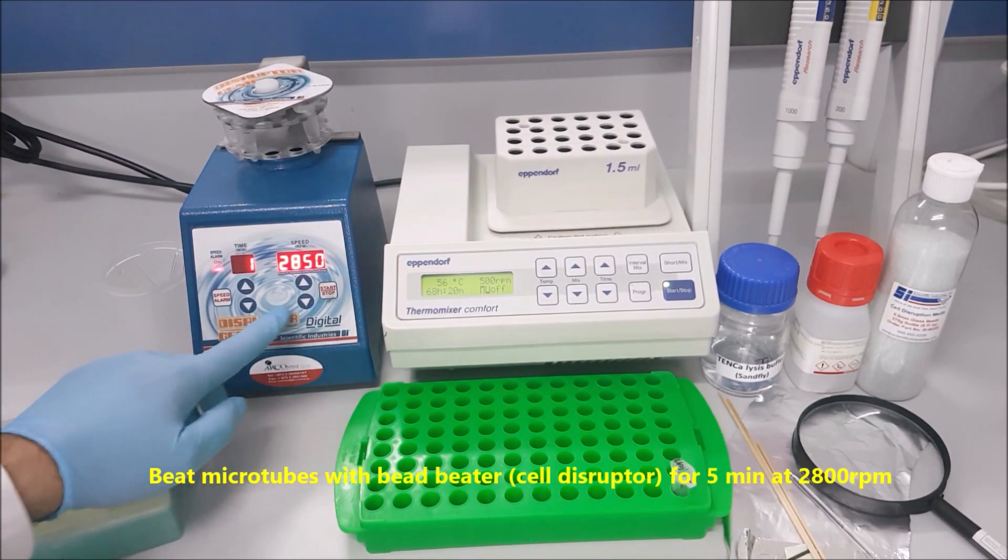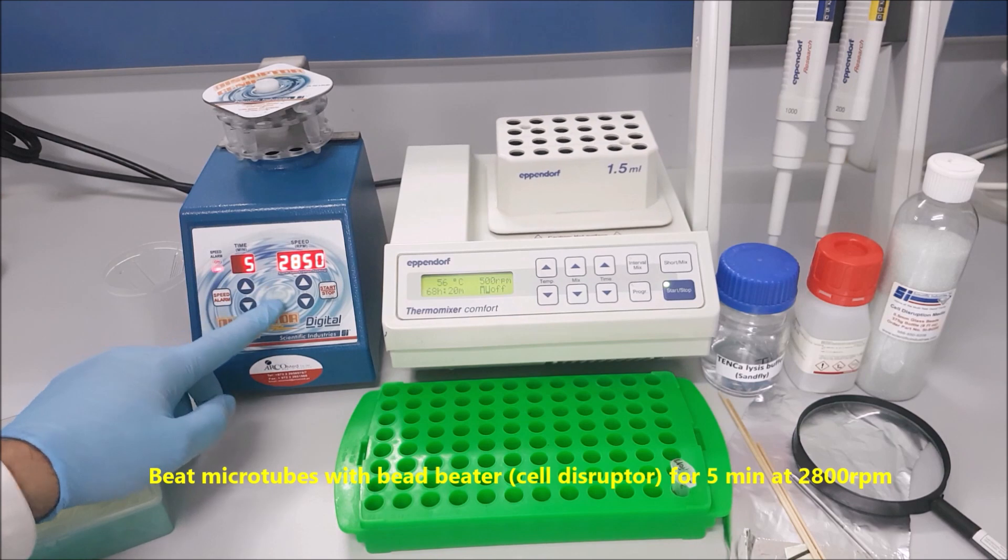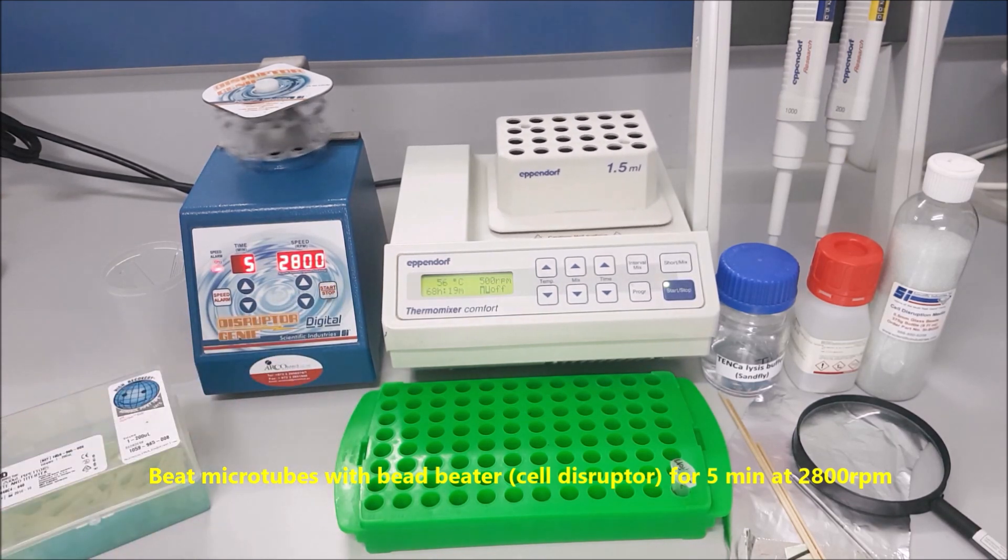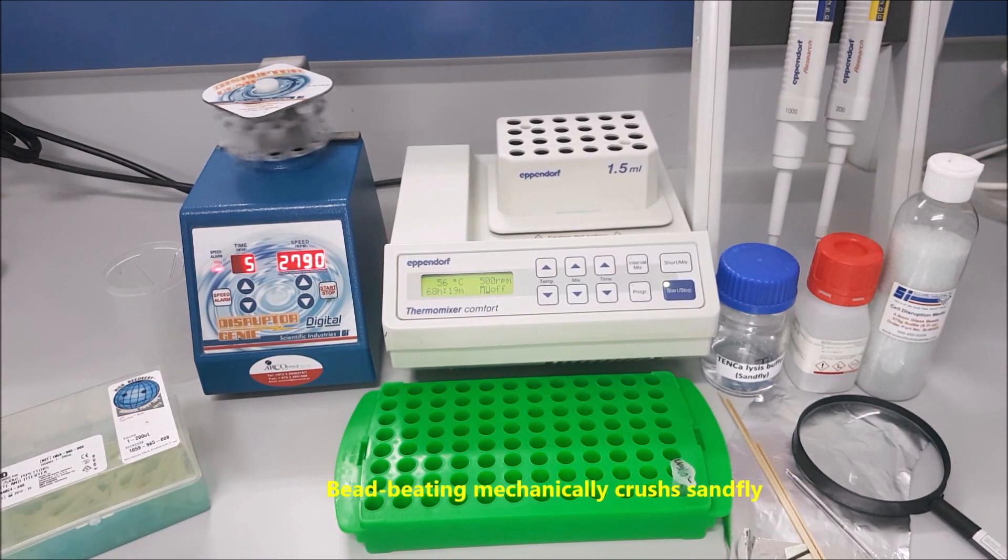Beat microtubes with bead beater, cell disruptor, for 5 minutes at 2800 rpms. Bead beating mechanically crushes sand fly.